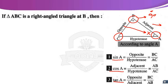Number two: cosine A equals the ratio between the adjacent side length over the hypotenuse side length. The adjacent of angle A is line segment BA. Therefore, cosine A equals the length of AB over the length of the hypotenuse CA, so cosine A equals AB over AC.